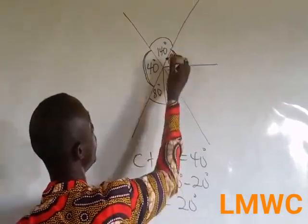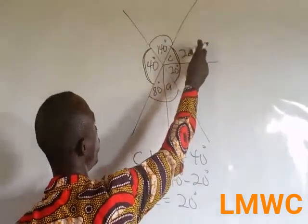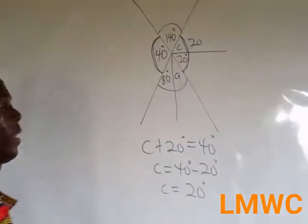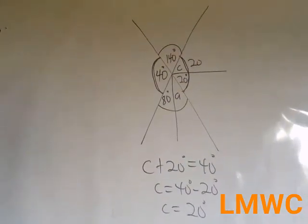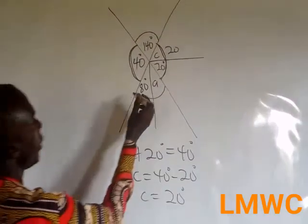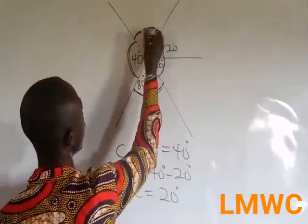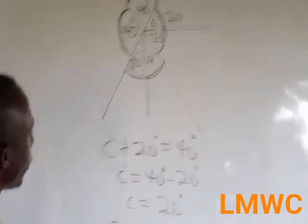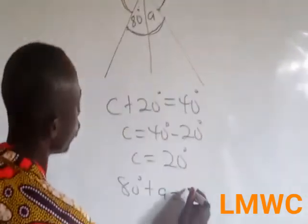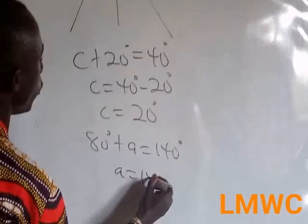This means once I bring 20, 20 plus 20, we are getting A. That's why vertically opposite angles are equal. This too is vertically opposite to 140, so it becomes 80 degrees plus A equal to 140. So A is equal to 140 minus 80 degrees. A is equal to 60 degrees.